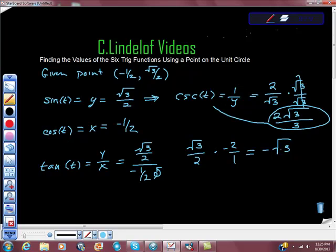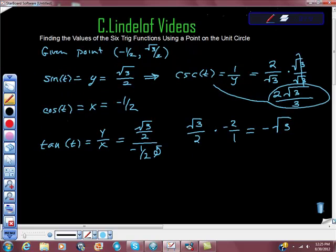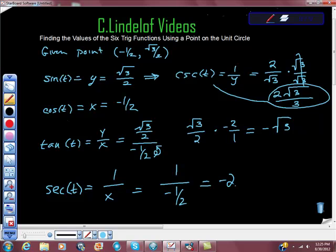For cosine, the opposite of cosine is secant of t, and secant of t is one over x, so that's one over negative one-half, which is equal to negative two.